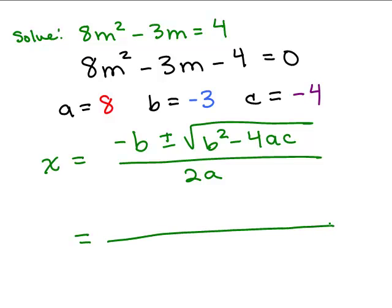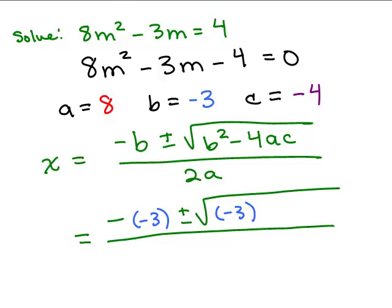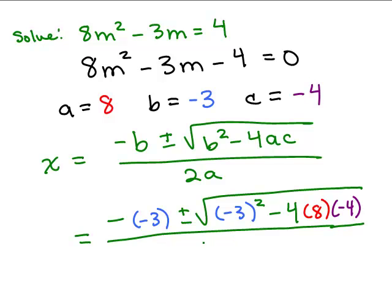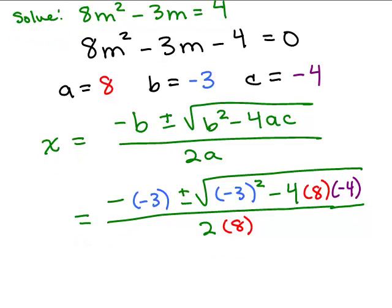With this big fraction bar, I'm going to have the opposite of b. Now b is negative 3, so I plug in negative 3 for b, plus or minus. For b squared, you could either write negative 3 times negative 3, or put negative 3 in parentheses squared — don't forget the parentheses. Minus 4 times a times c, where a is 8 and c is negative 4. That's all under the square root, and the denominator is 2 times a.